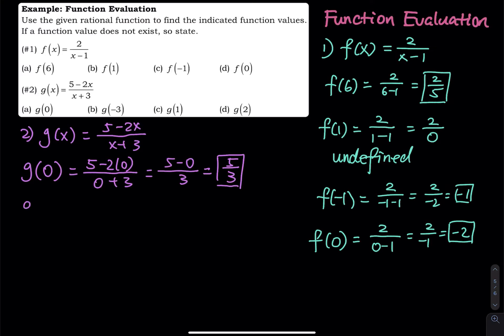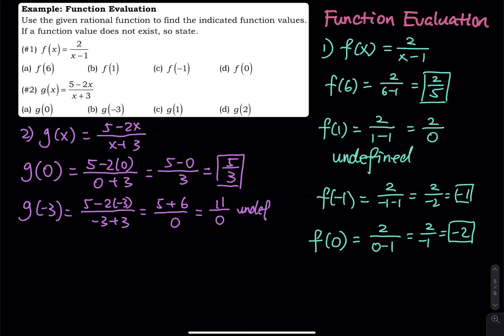When x is equal to negative 3, we have 5 minus 2 times negative 3 divided by negative 3 plus 3. So that is 5 plus 6 divided by 0, which is 11 divided by 0. Is this defined? No, the answer is undefined. 0 cannot be a divisor. If you don't believe me, check this out on your calculator — 11 divided by 0. The calculator will give you an error. Error means undefined.